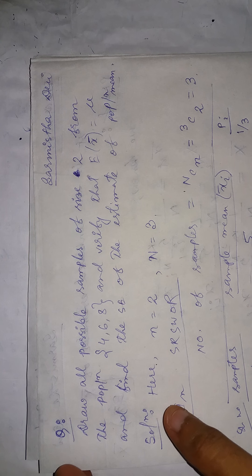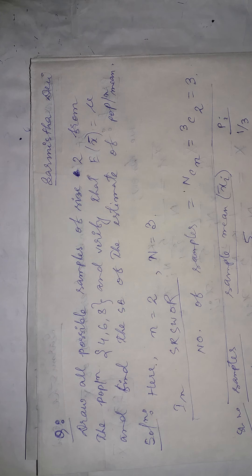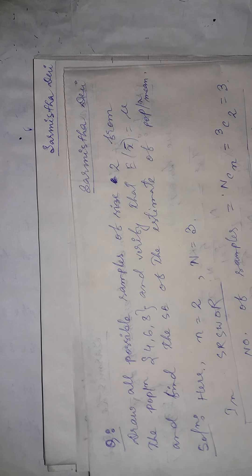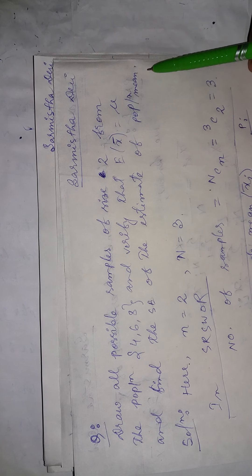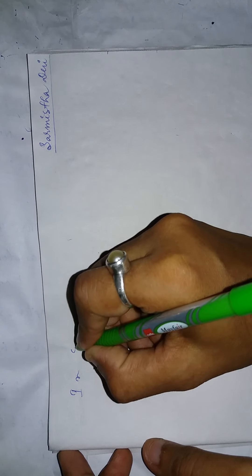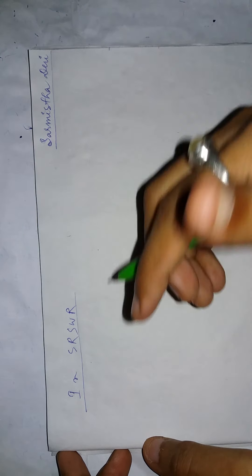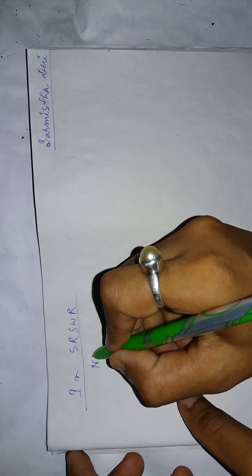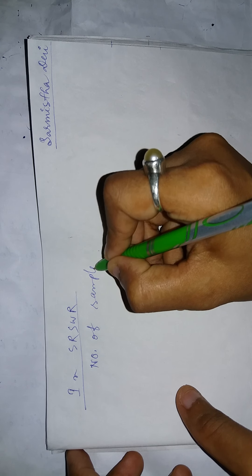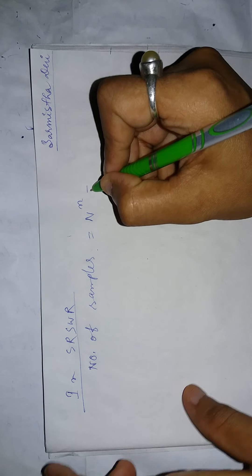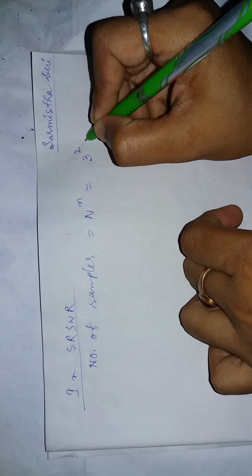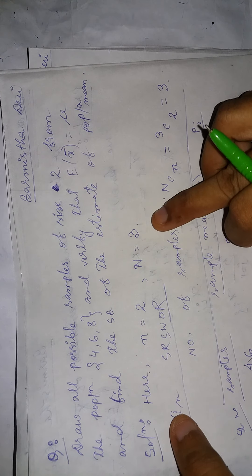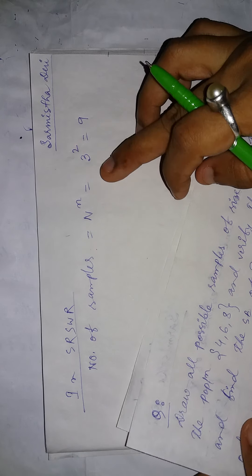Good morning, today we will discuss the same problem in case of simple random sampling with replacement. We will verify that expectation of sample mean is equal to population mean and calculate the standard error. In simple random sampling with replacement, the number of samples will be N to the power small n. Population size N is 3, sample size n is 2, therefore we get 9 samples. Without replacement it would be N choose n, but with replacement we use the power.